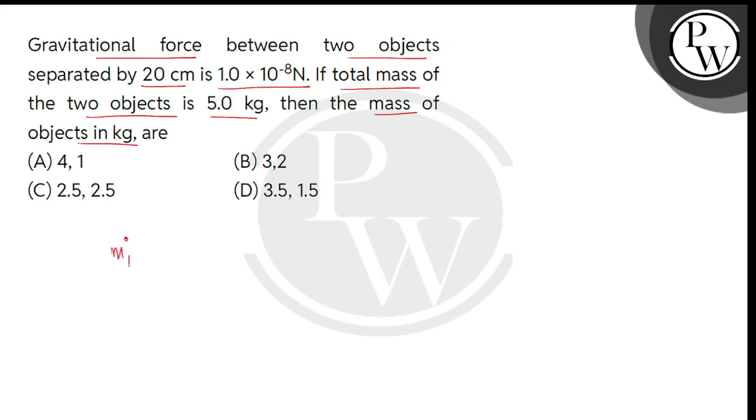So children, let's take two objects M1 and M2 with total mass of 5 kg. It means M1 plus M2 is 5 kg. If we consider the first mass M, then the second remaining mass will be 5 minus M. And the distance given between them, that is R, is 20 cm. We can write this as 2 multiplied by 10 to the power minus 1 meter.